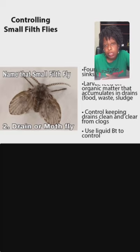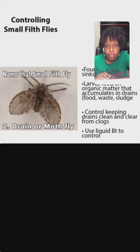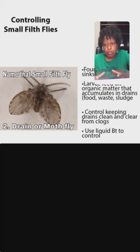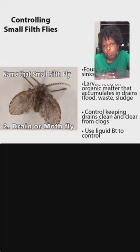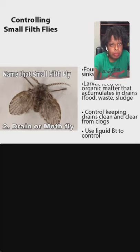Another way to control drain flies is to use liquid Bti. It's a bacteria used to control flies, and though the liquid is kind of expensive, it works the same way it does for fungus gnats — it controls the larvae. Once you clear up the source of their food and the accumulation of moisture, you get rid of the flies. All these flies need a moist environment to survive, so fix leaky drains and pipes to eliminate that water source.